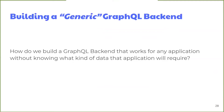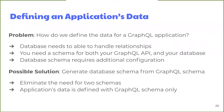When we first started building Satellite, we were immediately faced with the question: how do we build a GraphQL back-end that works for any application, without knowing what kind of data that application will require ahead of time? Typically, the back-end for a GraphQL application will require some kind of persistent data store. A common database good for storing interrelated data is a relational database. A relational database requires a schema of its own to define how the data is structured, in addition to the GraphQL schema required to define the API — which would add another piece of configuration that would have to be provided to the back-end.